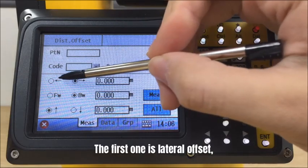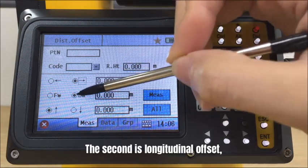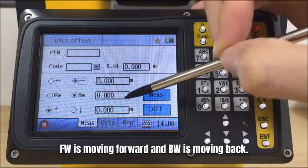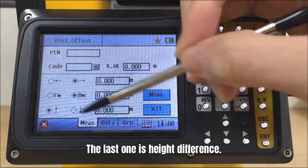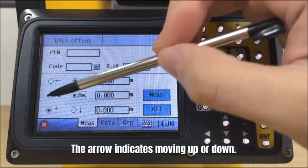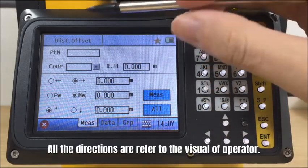The first one is lateral offset, the arrow indicates moving left or right. The second is longitudinal offset, FW is moving forward and BW is moving back. The last one is the height difference, the arrow indicates moving up or down. All the directions refer to the visual of the operator.